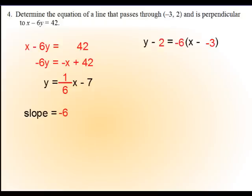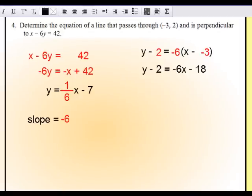At this point, the problem kind of finishes itself. Go ahead and distribute that negative six. And if you were to write this in slope-intercept form, you would add two to both sides to finish off the problem. And that's it for that one.